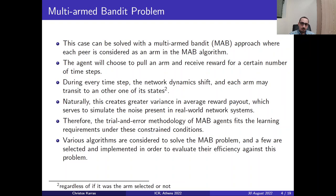The scenario we described before can be solved utilizing the multi-armed bandit approach where each peer is considered as an arm in the MAB algorithm. The agent will choose to pull an arm and receive reward for a certain number of time steps. During every time step the network dynamics shift and each arm may transit to another one of its states. This happens regardless if they are being selected or not. This creates greater variance in average reward payout which serves to simulate the noise present in real-world network systems. Therefore the trial and error methodology of the MAB agents fits the learning requirements under these constrained conditions. We studied various algorithms in order to solve the MAB problem and we select a few and implement them in order to evaluate their efficiency against the problem we studied.